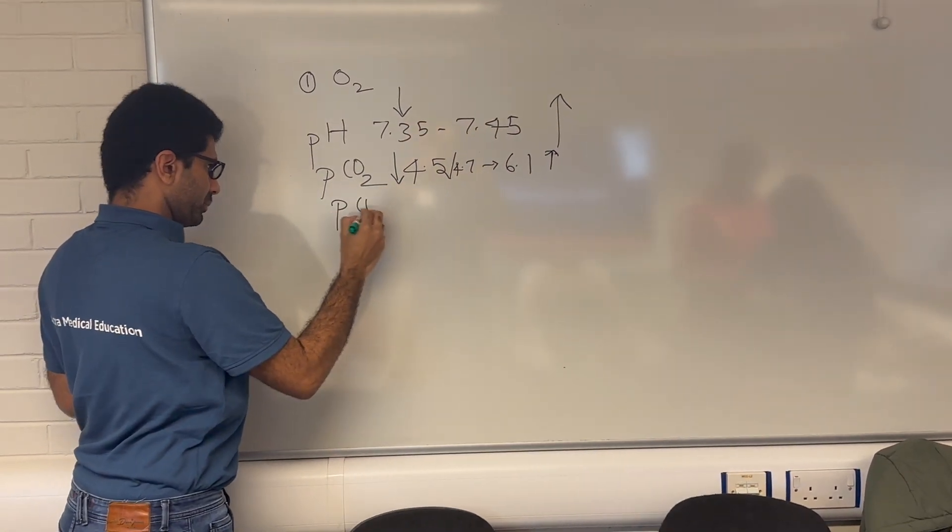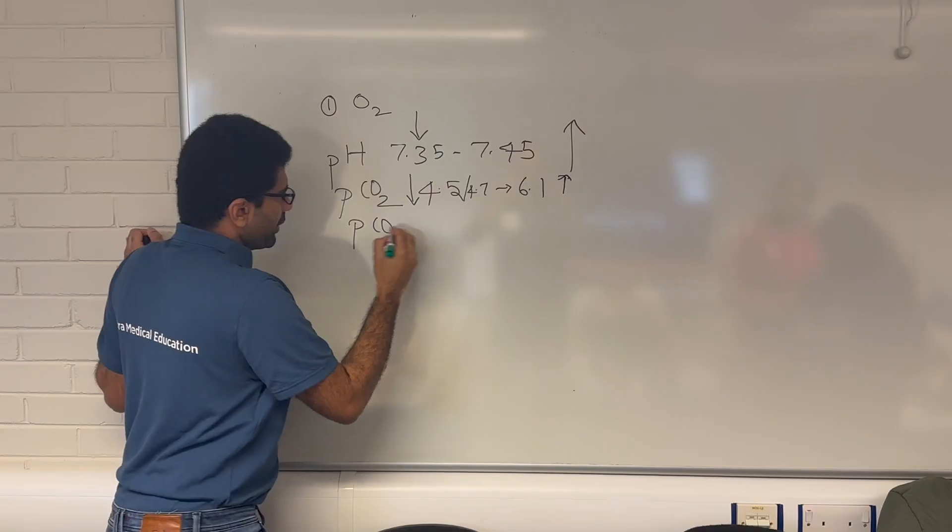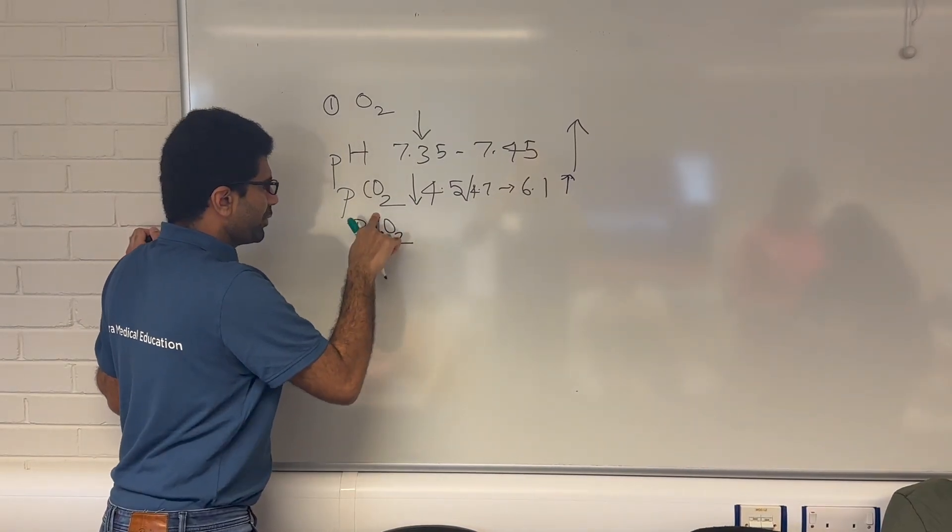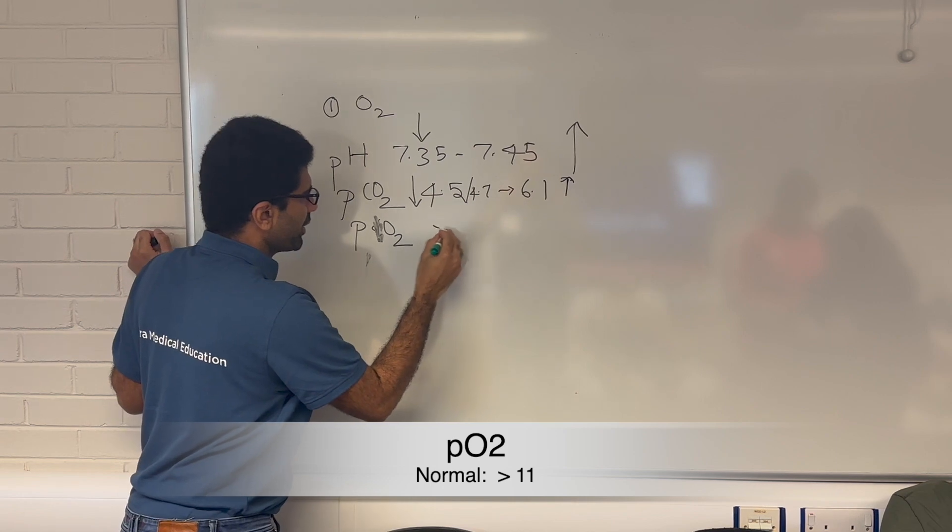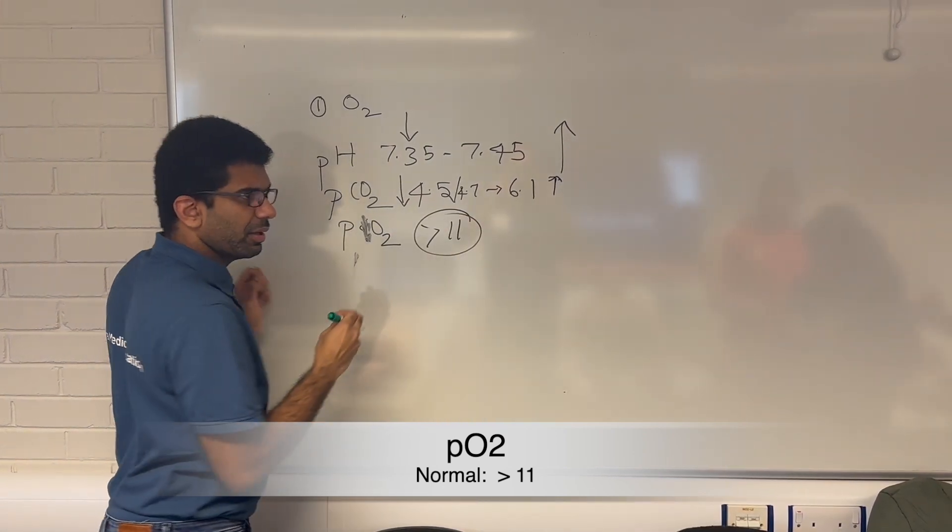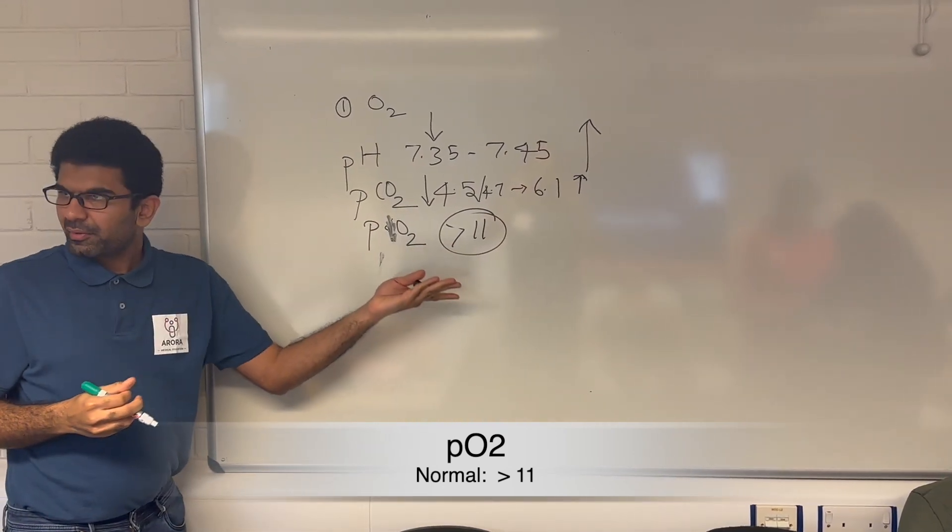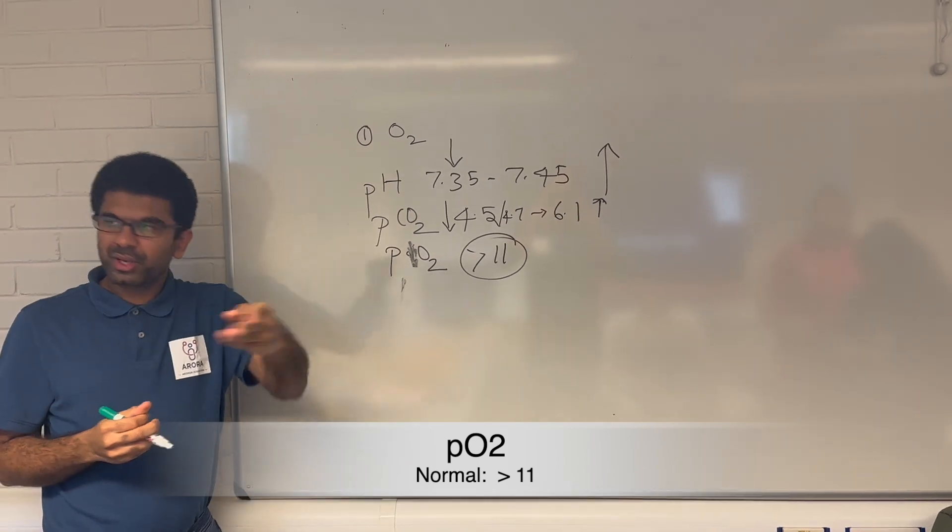Now, coming to the oxygen, what's the value? More than 10. Yeah, PO2, what is the value? 10, 14. They say more than 11. So again, it might be 11, but that is because you are giving oxygen.